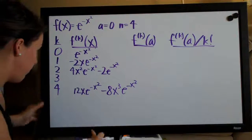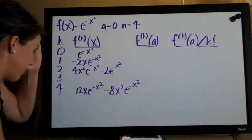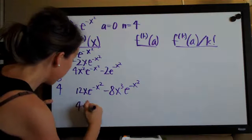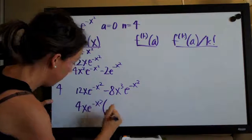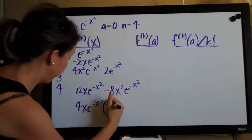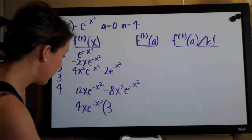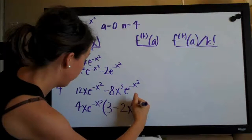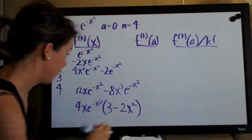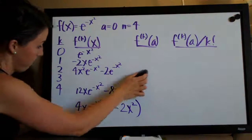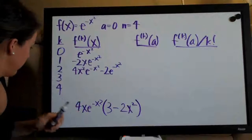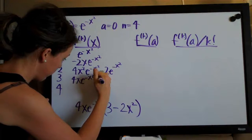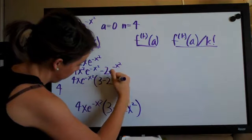So if that's factored, let's go ahead and simplify this a little bit. I'm still going to factor out 4x·e^(-x²), which would mean for the first term we're left with 3, and the second term we're left with minus 2x². So that's our derivative: 4x·e^(-x²) times (3 minus 2x²).